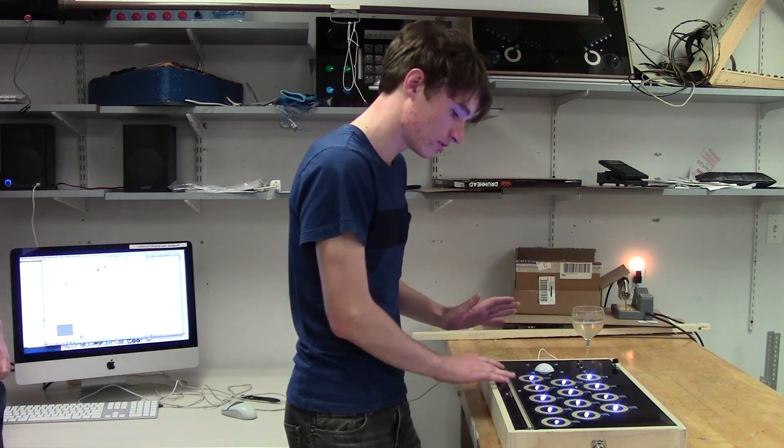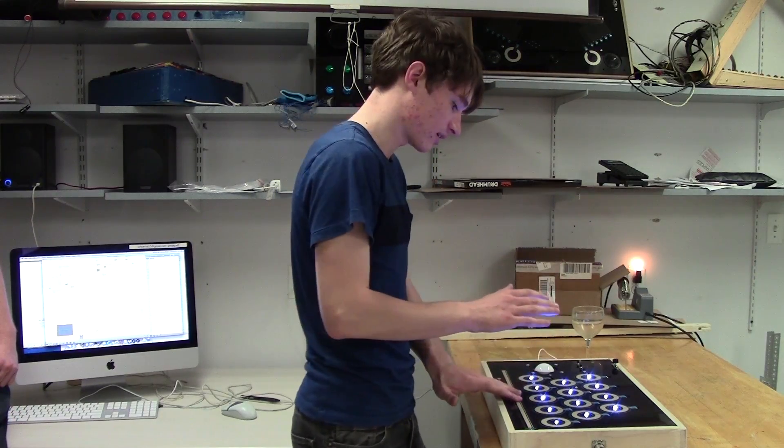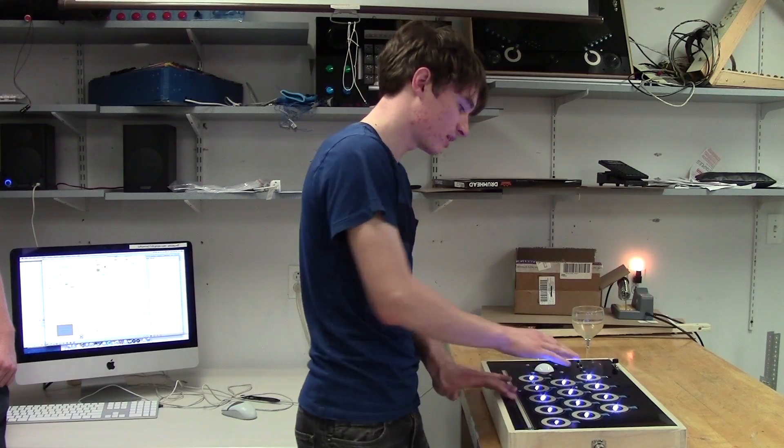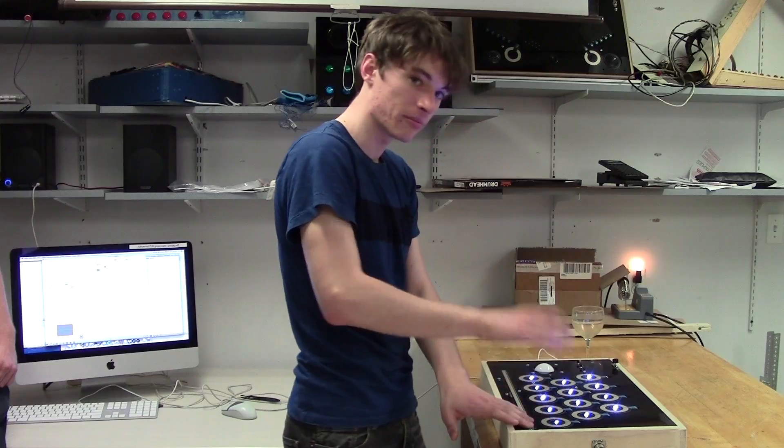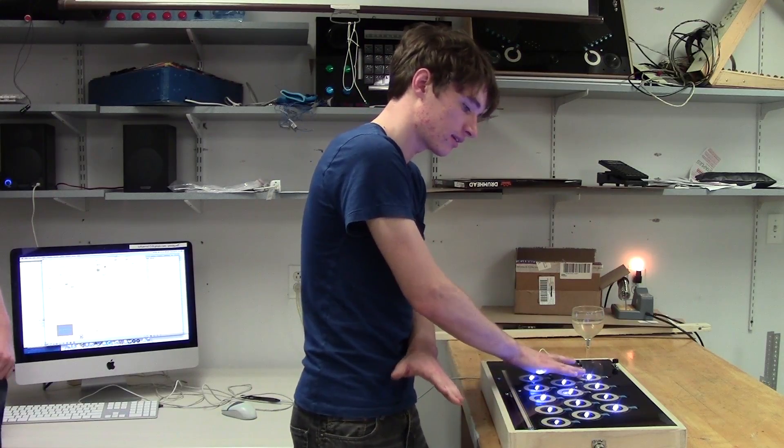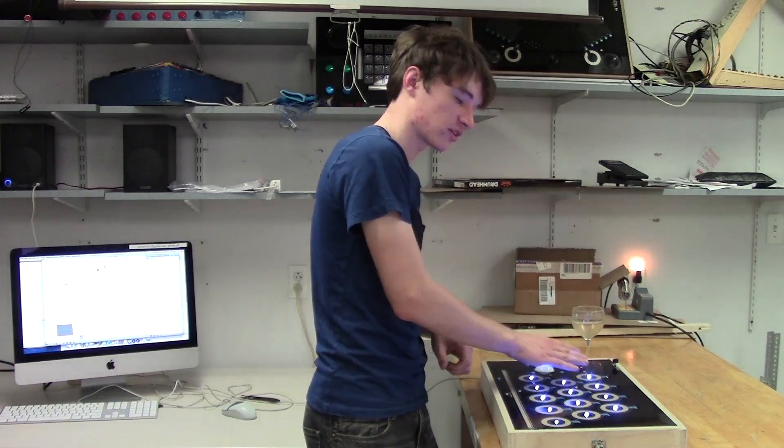The idea is that you have volume here, just like a theremin has volume on the left hand, and you have pitch here. Like any of these notes, it's a different pitch. Right in the bottom of the soft pot, it brings you directly to the pitch of the note that's represented by the soft pot.